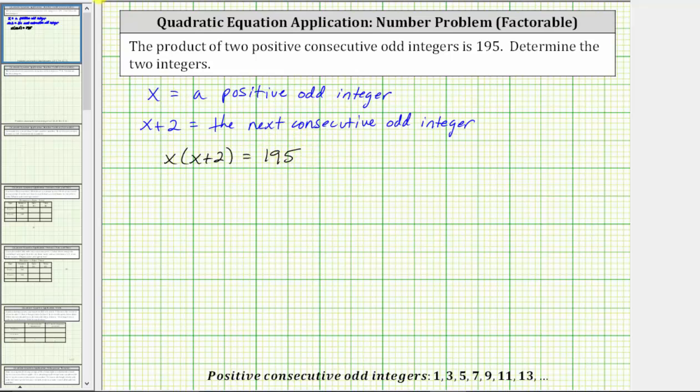We begin by simplifying the left side by clearing the parentheses, which means we now distribute x. X times x equals x squared plus x times two is two x equals 195.